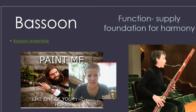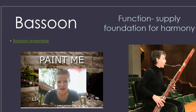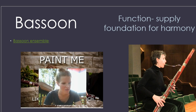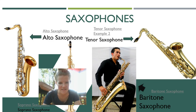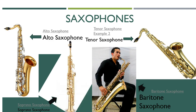Then we have the bassoon, which is a lot larger and plays a lot of the lower notes, providing the foundation of harmony for the ensemble. Then we have the saxophones — there are four main ones: the alto saxophone, the soprano saxophone which is straight up and down, the tenor saxophone, and the baritone which is the largest of the four. As a general rule, if an instrument is larger, it's going to be lower; and the smaller the instrument, the higher it can play.